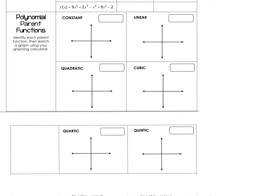We're going to do a very quick review of our parent functions, and it's going to be really important that you pay attention to what's happening with the ends. A constant function is defined as f(x) = c. When f(x) or y equals a constant or just one number, it's going to be a horizontal graph. So if y equaled 4, it would be a horizontal line, because it doesn't include an x in it anywhere, so it's never going to touch the x-axis.